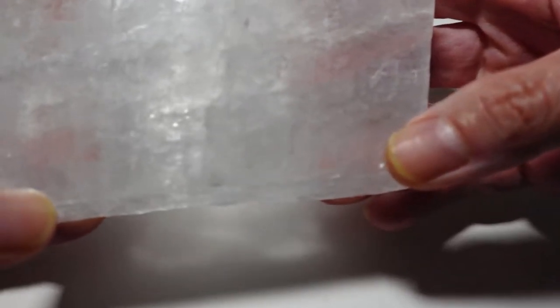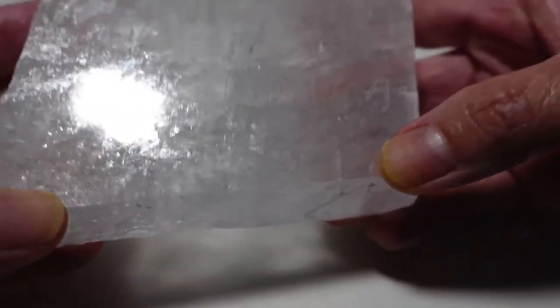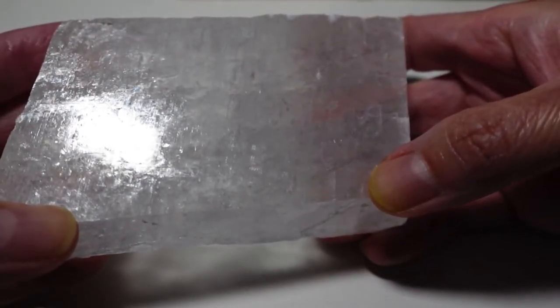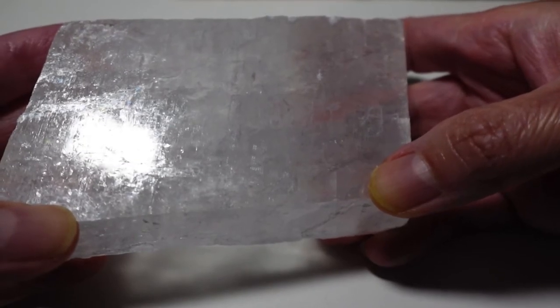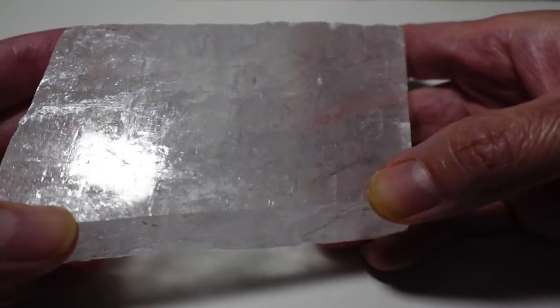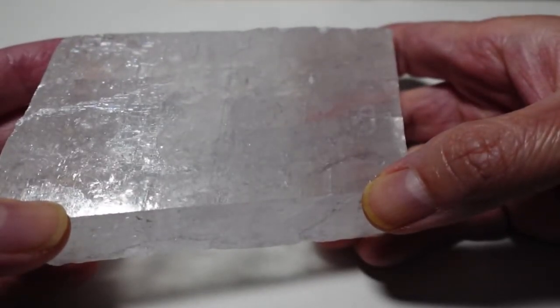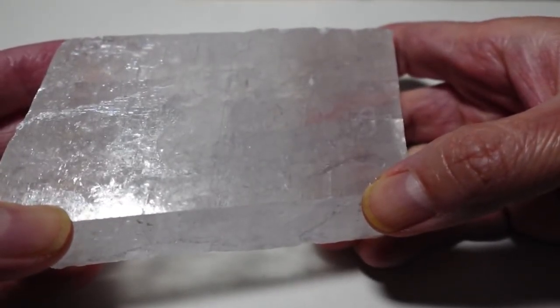Iceland Spar helps in calming, clearing, cleansing, and restoring yourself, your mind, your aura, and your energy. It can be found in Iceland, Belgium, Czech Republic, Peru, Brazil, and Mexico.